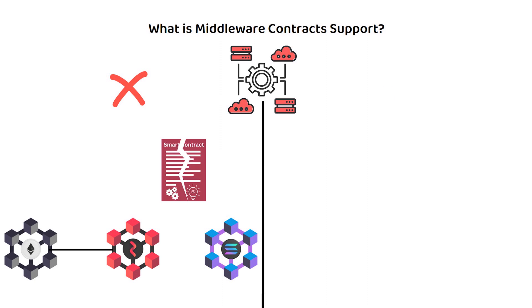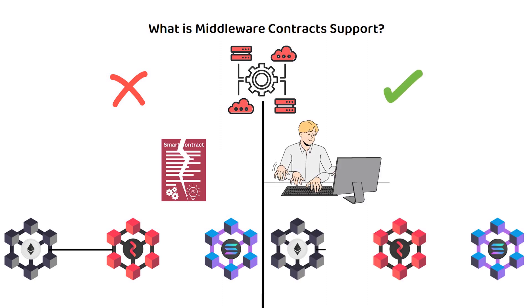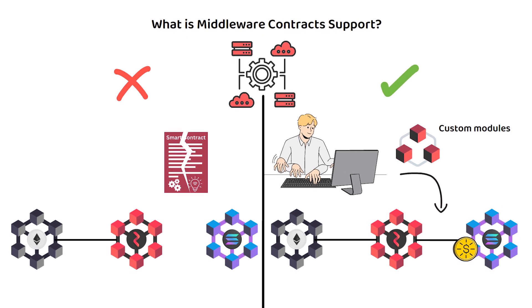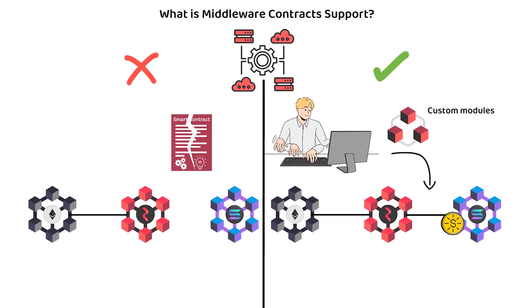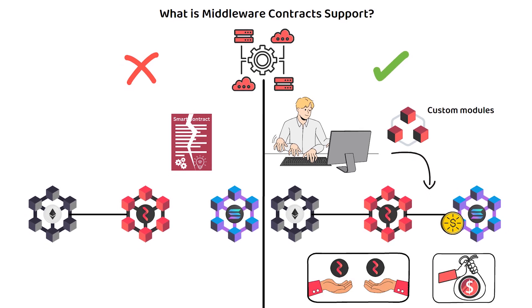Router Protocol's middleware contract support allows developers to create custom modules for cross-chain data processing, which reduces the errors when transferring assets or data between platforms. By adding this layer of flexibility and customization, applications like decentralized exchanges and lending platforms can improve their interconnectivity and the overall user experience.